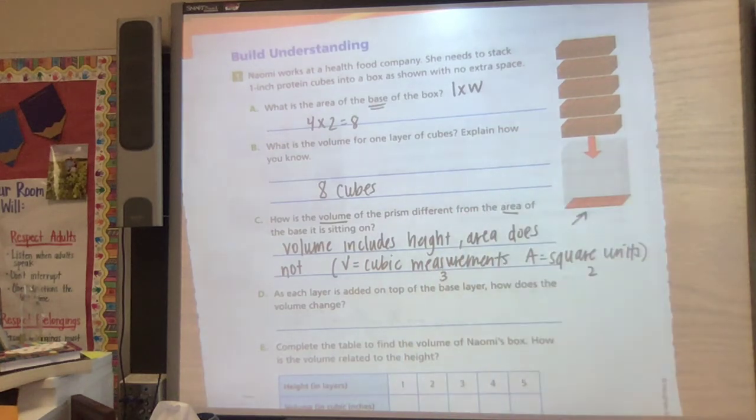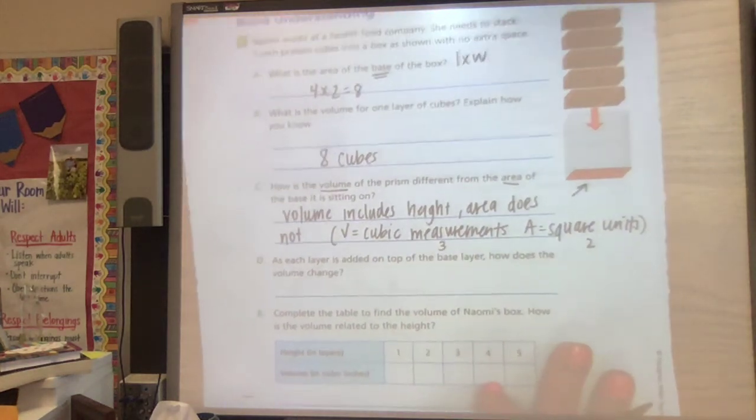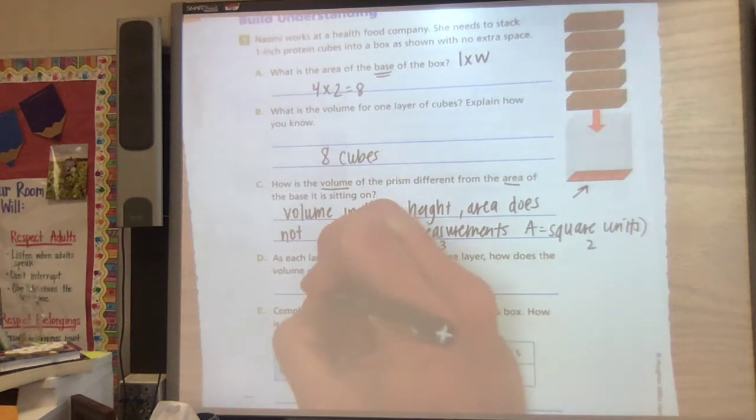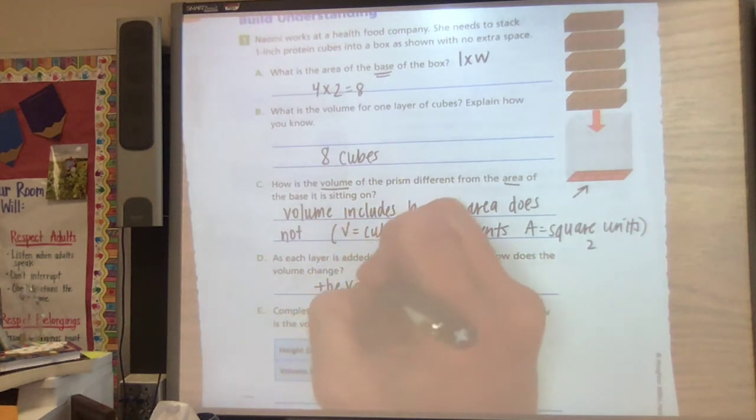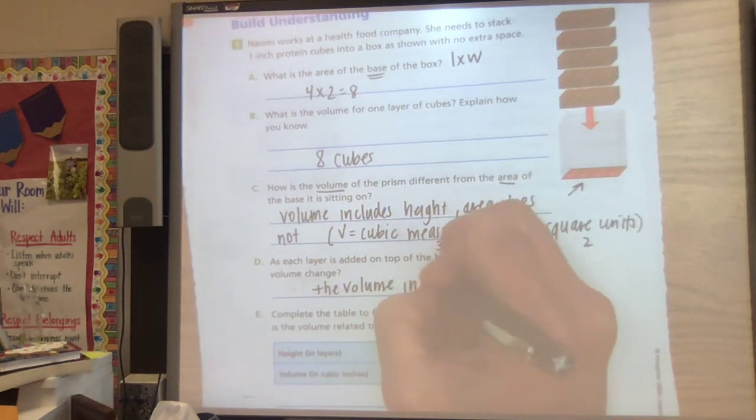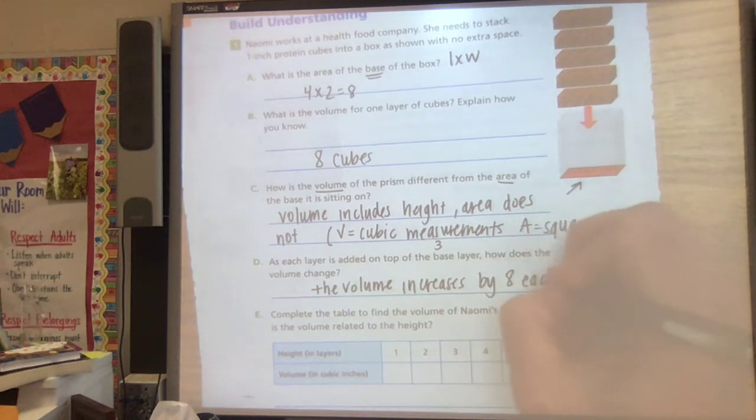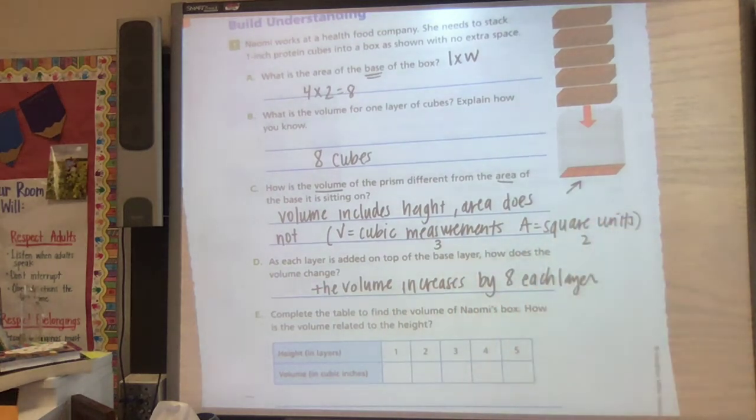As each layer is added on top of the base layer, how does the volume change? As you add each layer, the volume increases, and it increases by eight each time because each layer we know is eight units.